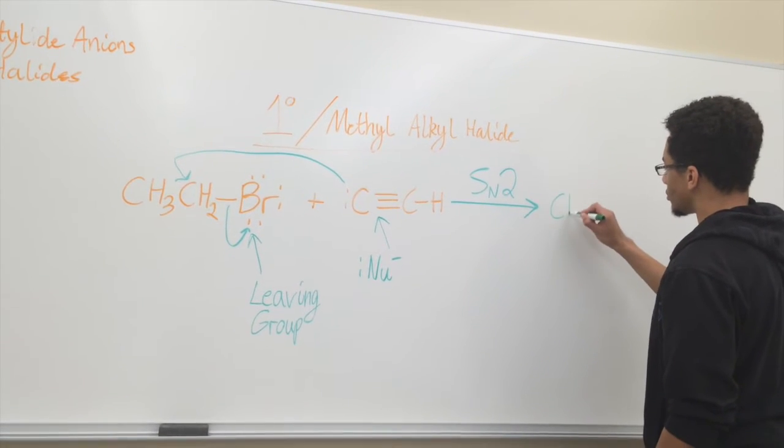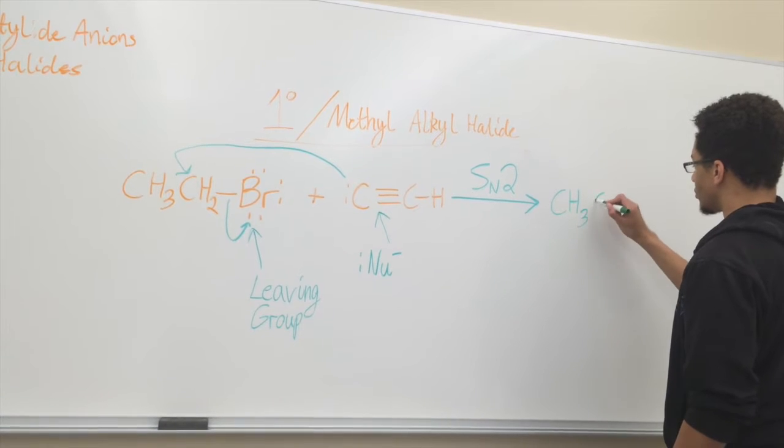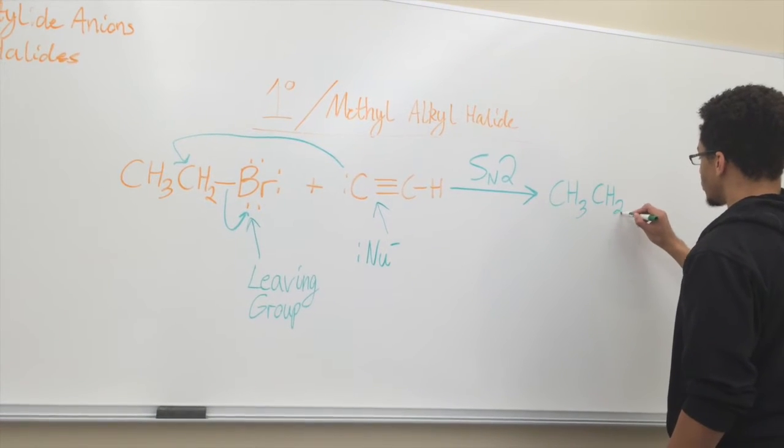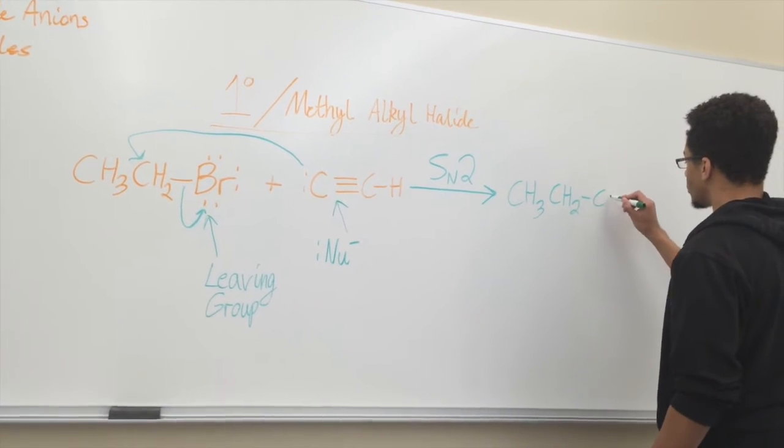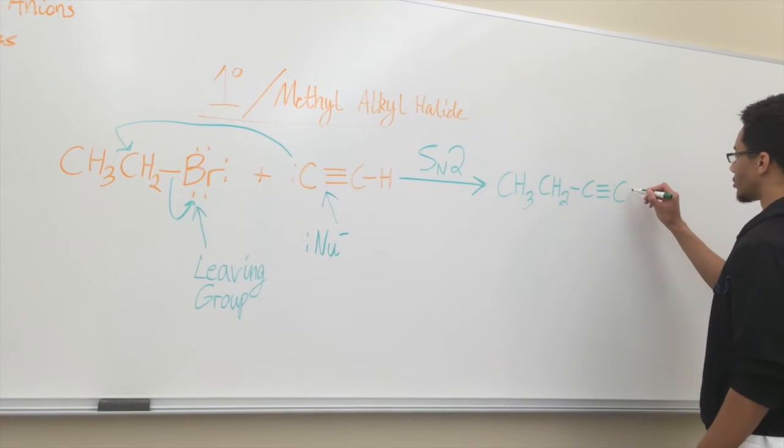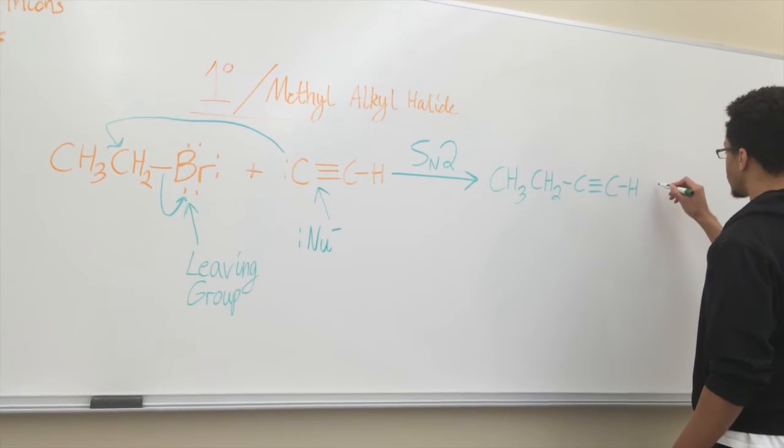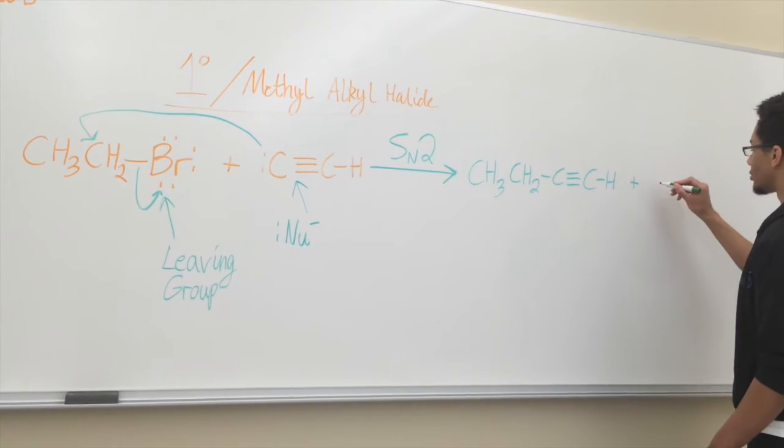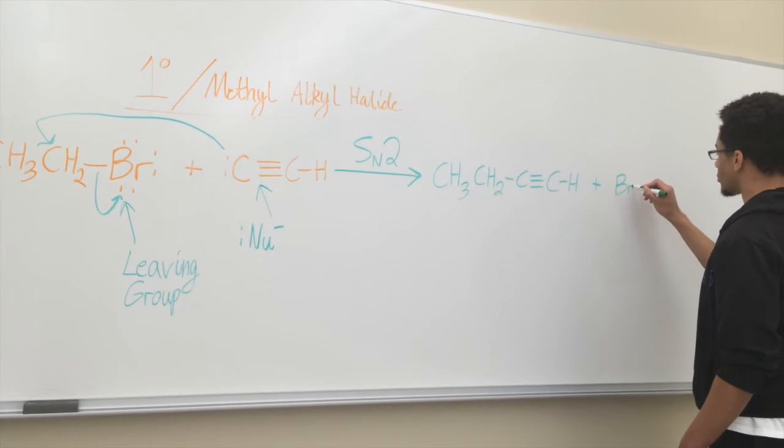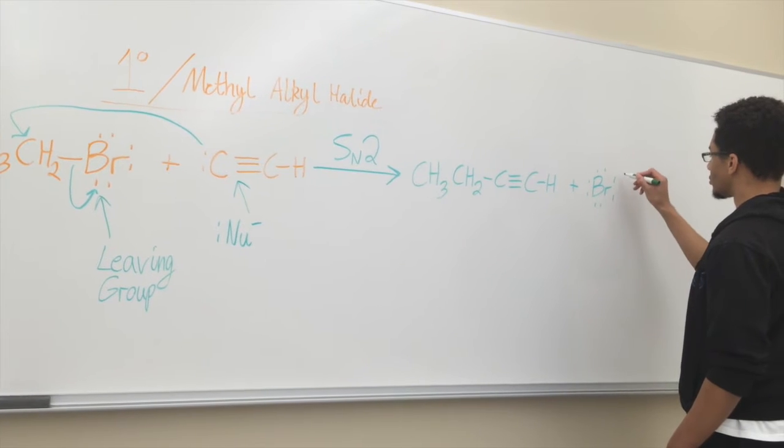The SN2 reaction will be the fastest reaction here, as you'll see in a minute when we go over secondary and tertiary alkyl halides. All that happens here, basically, is a nucleophilic substitution with acetylide anions, just to form a new carbon-carbon single bond.